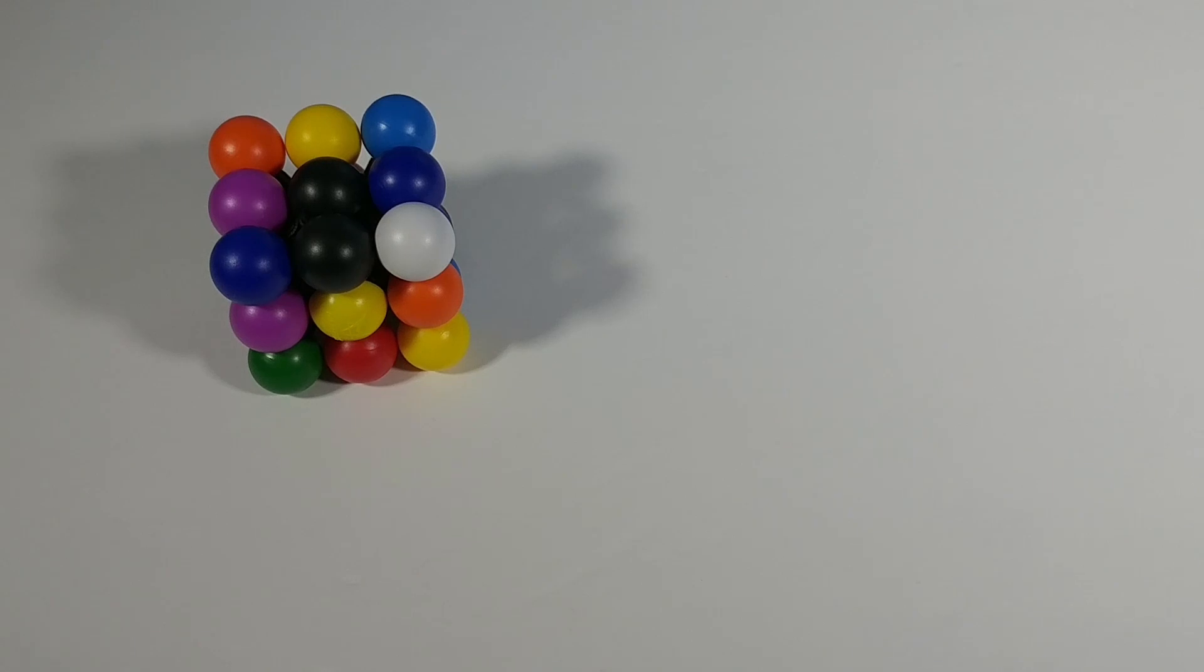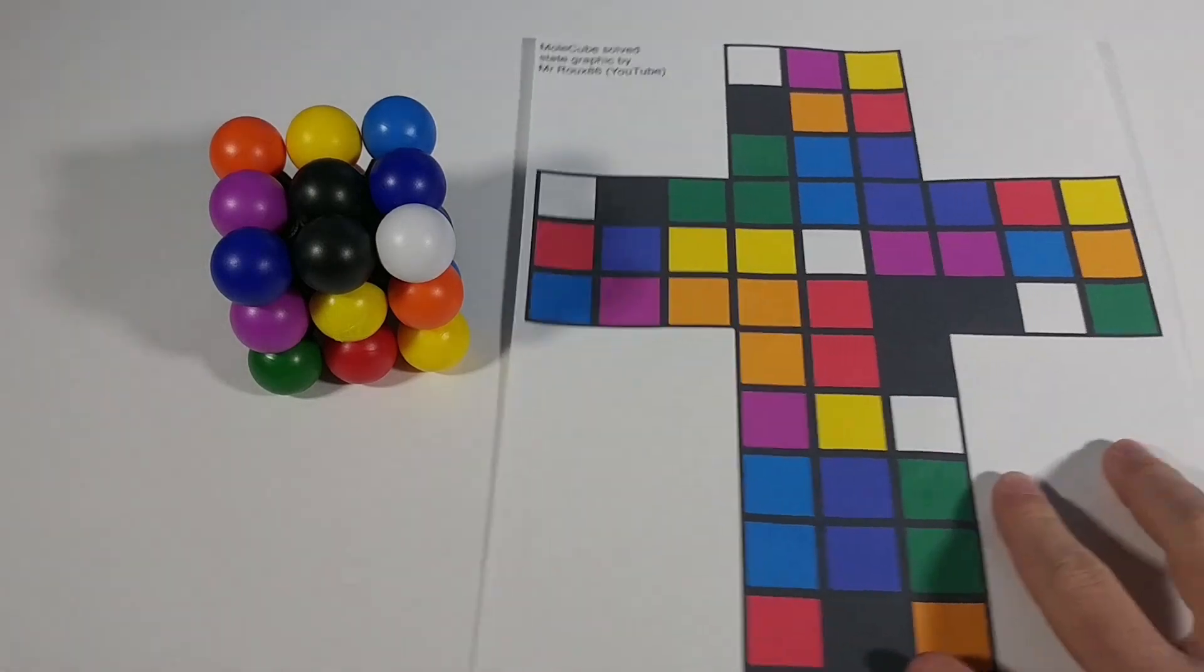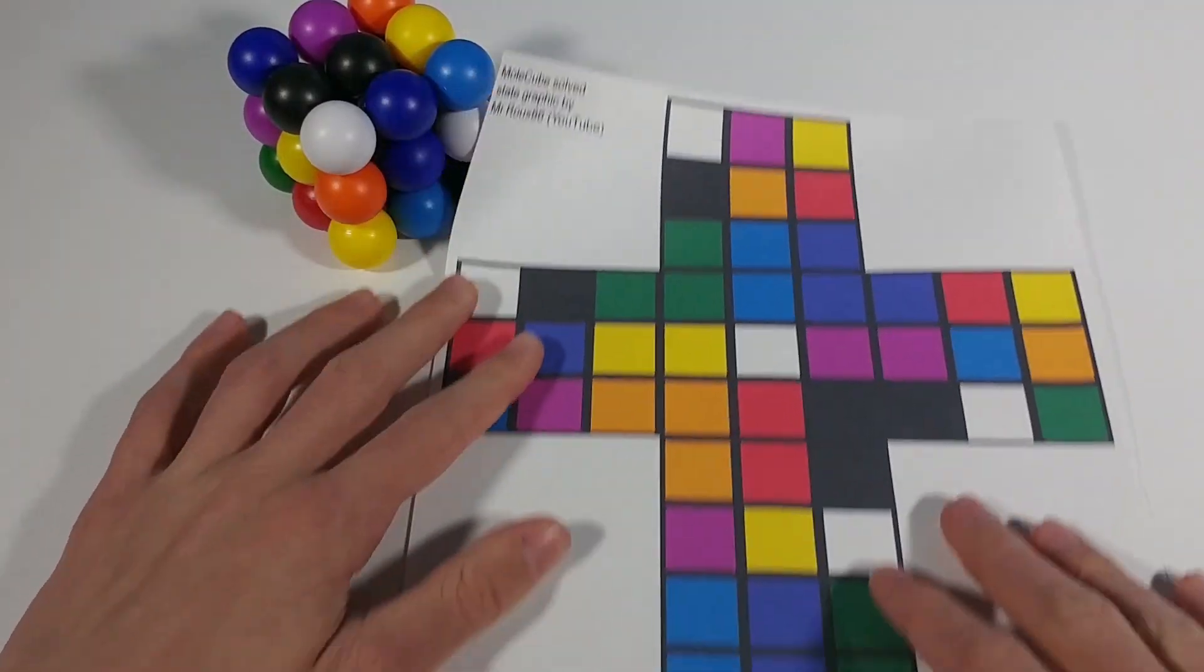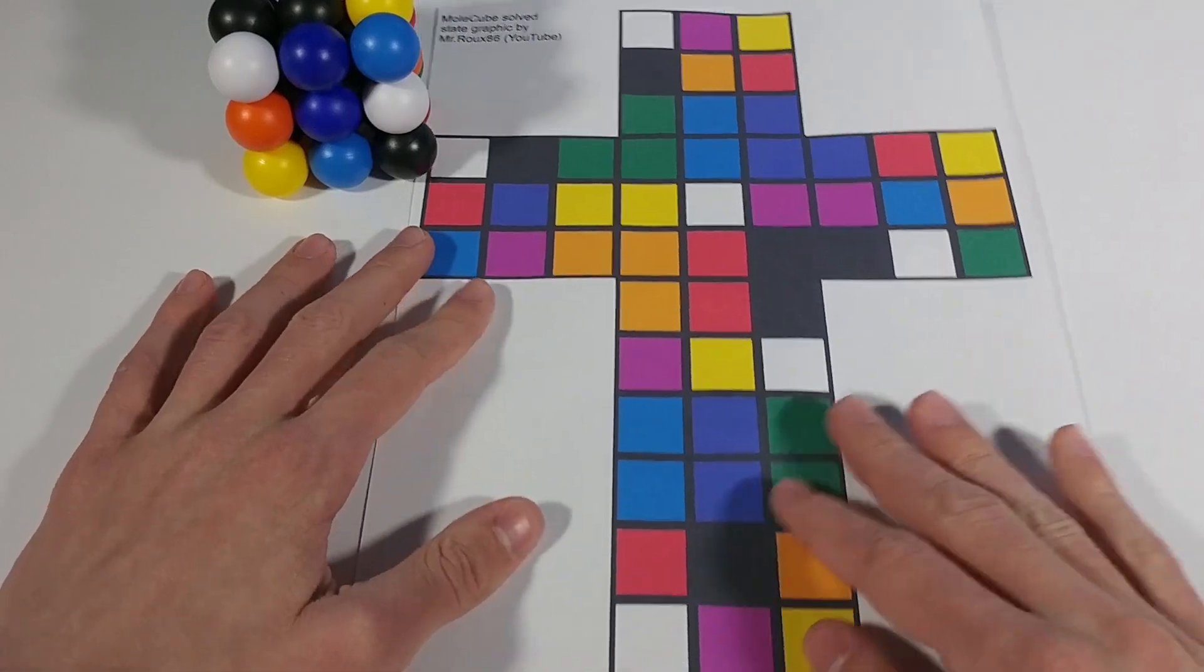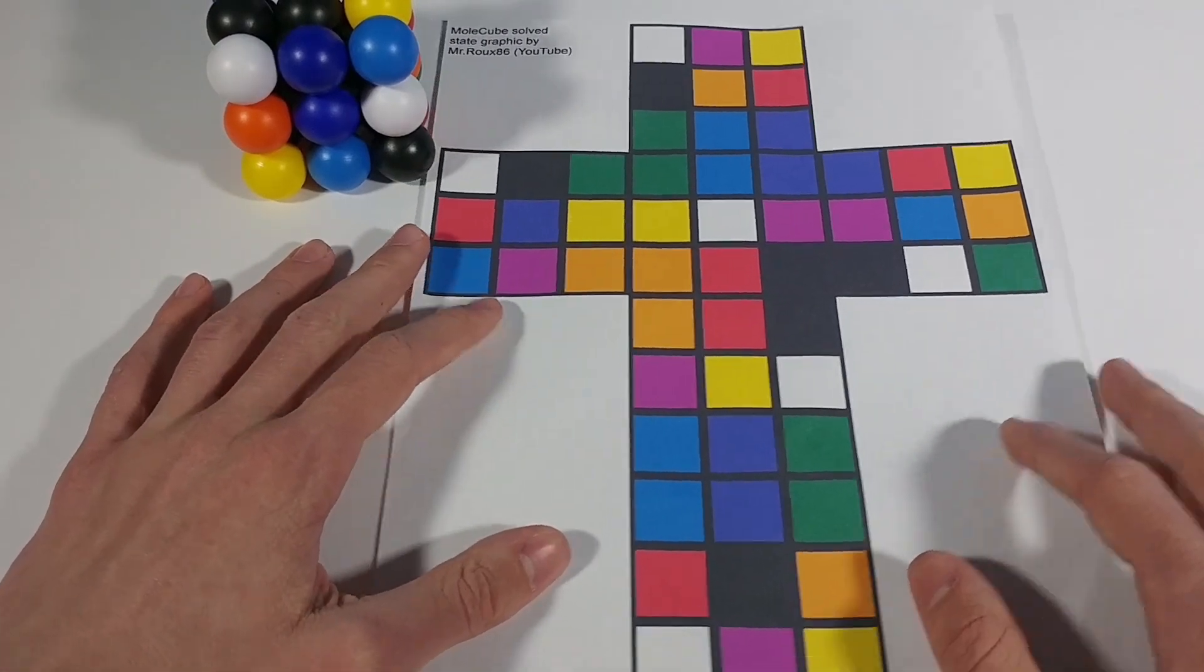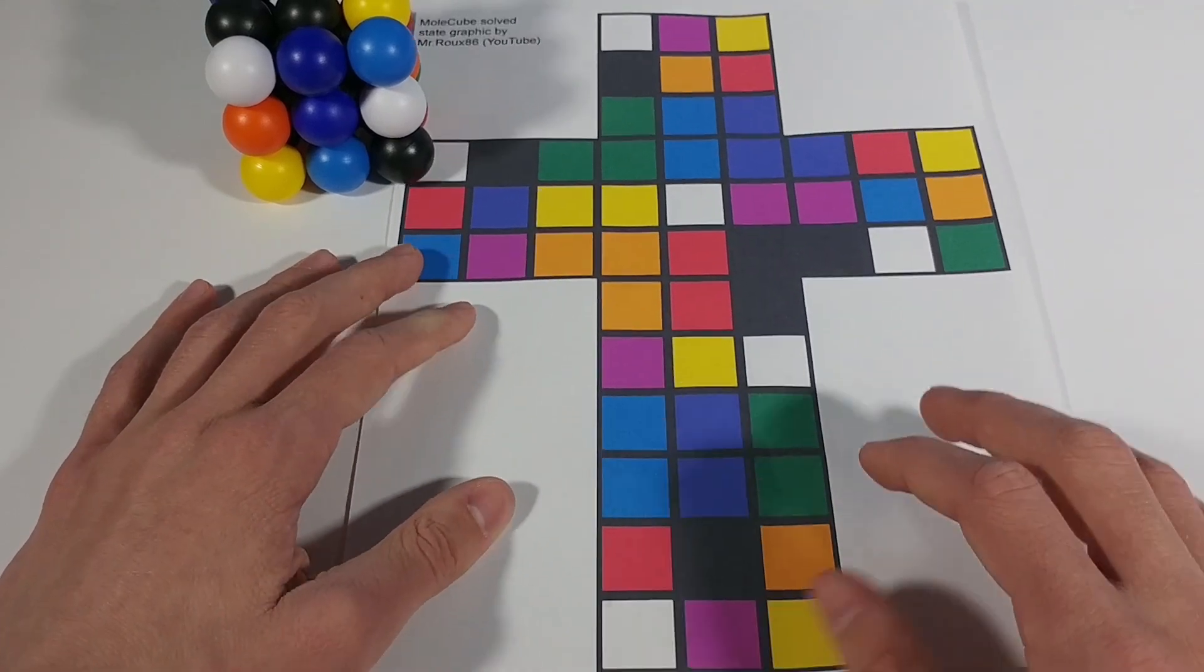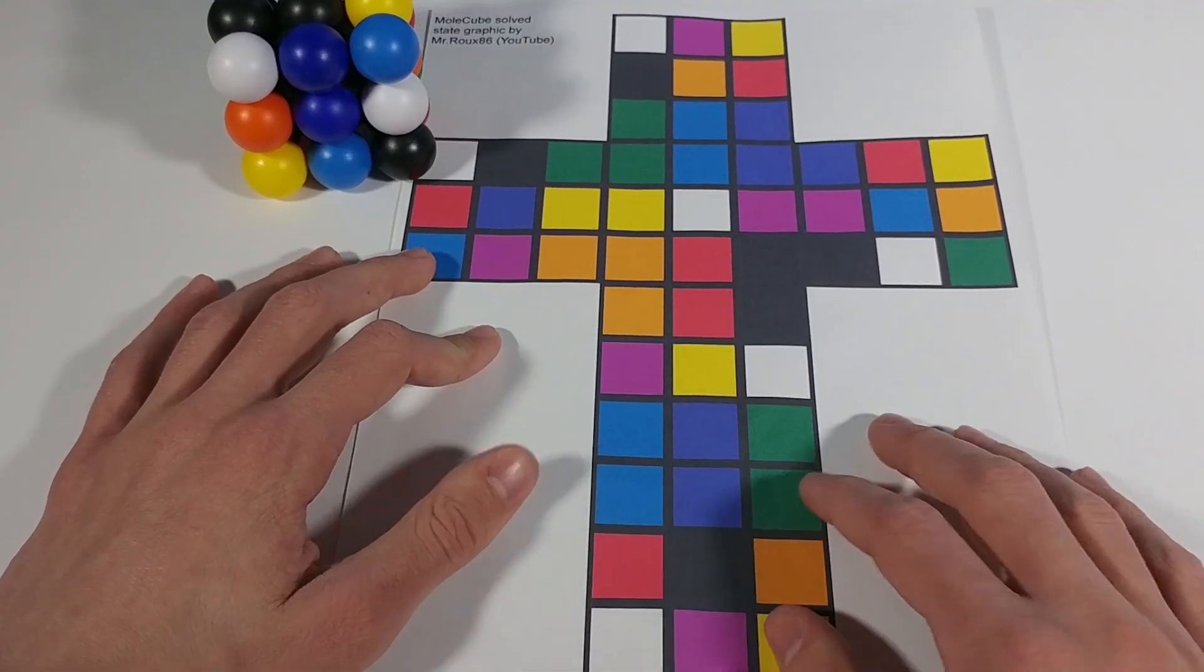So you're going to need to go down to the description of this video where you're going to find a link to this graphic. So this graphic is a little like 2D layout of the molecule but it's completely solved. It's kind of hard to see but this is a completely solved state of the molecule and we're going to be using this to guide us through our solve.